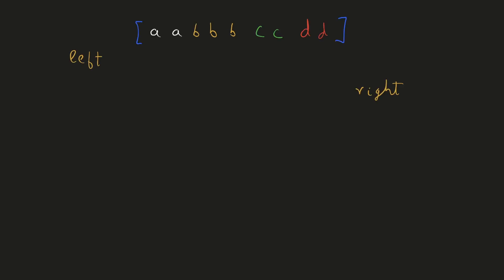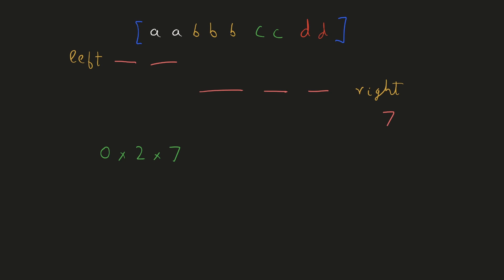Let's see how we can use our previous intuition to write our solution. Since the ordering of numbers does not matter, we can write the numbers contiguously. We will consider each group of numbers to be the middle element of the triplet and calculate the number of such triplets formed using left and right. Initially, the number of elements to the left would be zero and the number of elements to the right would be the length of the array. When we consider A to be the middle element, the number of elements to the left is still zero. The number of elements to the right reduces by the frequency of A — so we remove 2 to make it 7. The number of triplets with A as the middle element would be left × frequency(A) × right. Once we are done, we increment left by the frequency of A.